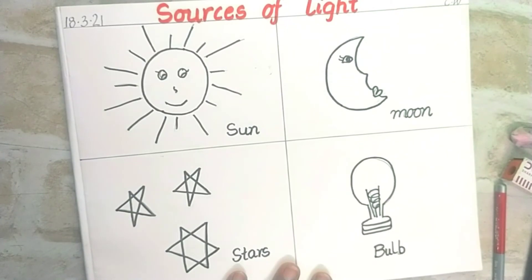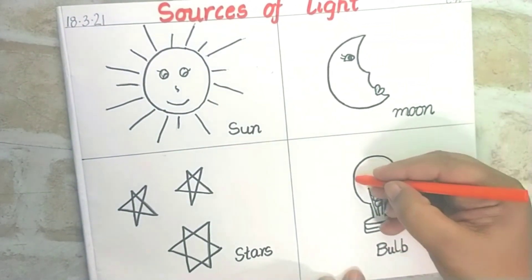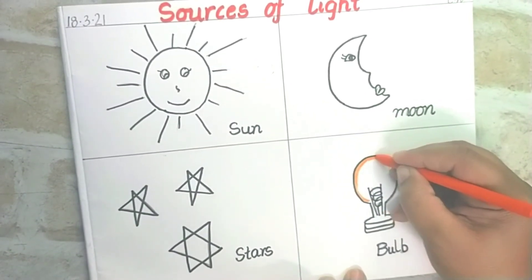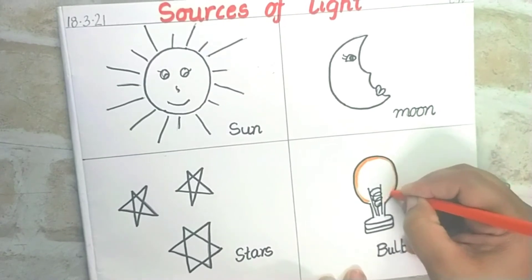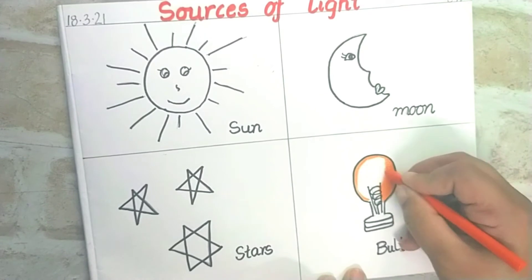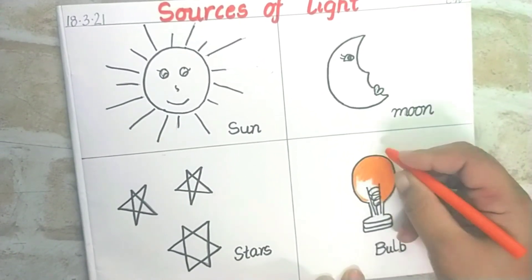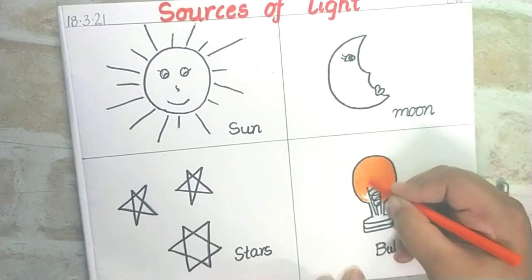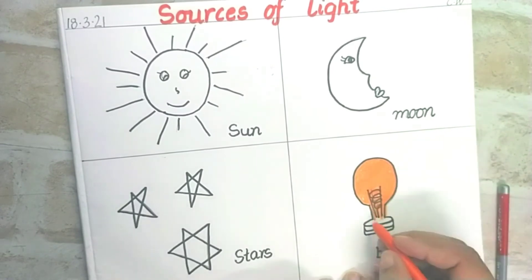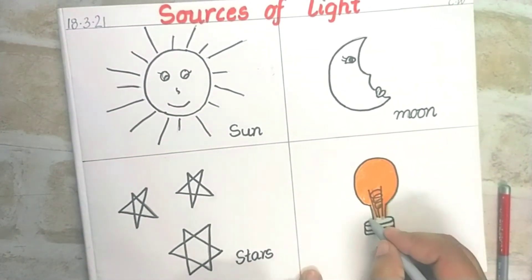We have taken our colors. I am going to start with the bulb first. Take an orange one and fill the bulb with orange color. Start with a thick thick outline and then fill it up, either side to side or up and down. Try to keep the strokes the same all over. Now we will color the socket part with gray color.